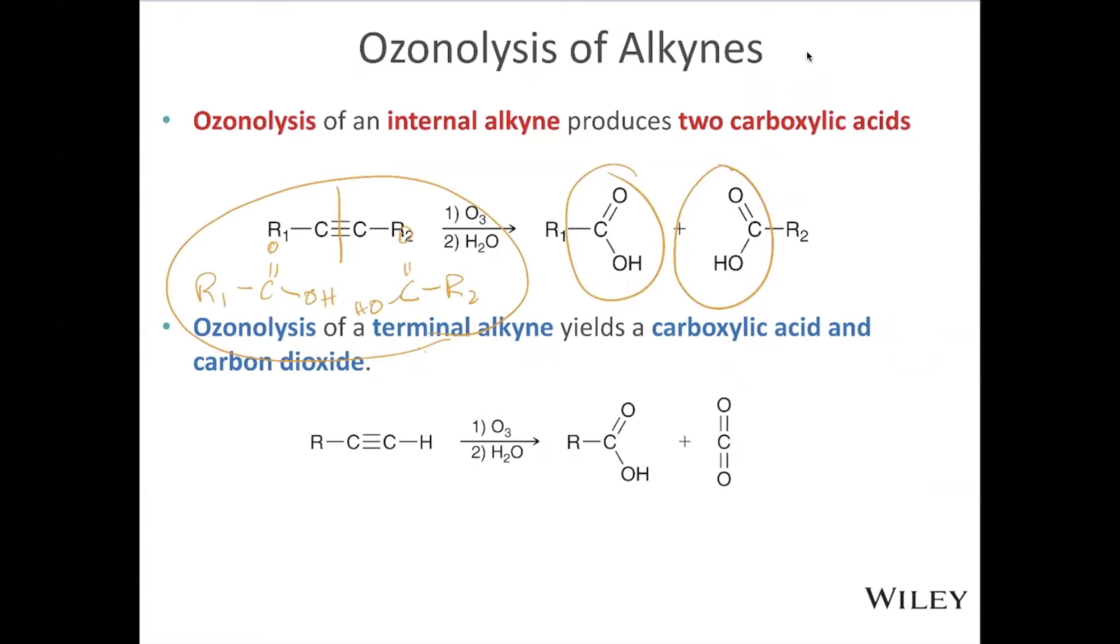So again, this reaction is for an internal alkyne, we will get two carboxylic acids. This carbon right here is this carbon right here, or this one, the way I've drawn it. And this carbon right here is here, or here, the way I've drawn it. And so an internal alkyne will give you two carboxylic acids.